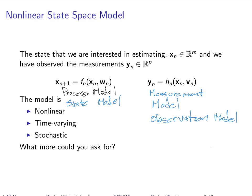It's most appropriately used when you've got something you're trying to estimate that can be represented by this kind of model. For tracking applications where we're actually trying to track something that's moving — the submarine, the whale, the truck, the lane, a rocket — this is a very good framework, and there are many other cases where you can use it as well.